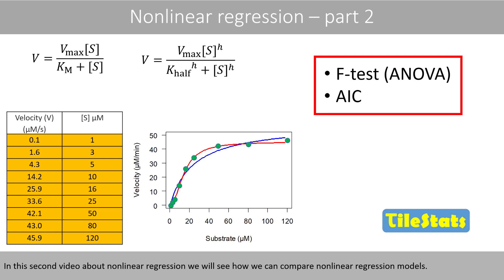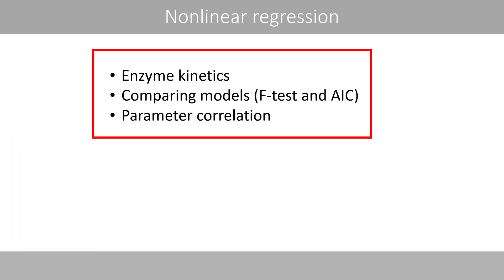In this second video about nonlinear regression, we will see how we can compare nonlinear regression models. We'll compare two enzyme kinetics models by using the F-test and the AIC value. At the end of this video, we'll have a look at parameter correlations.